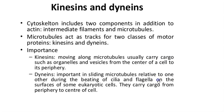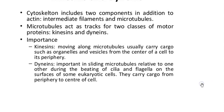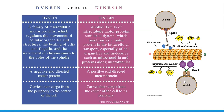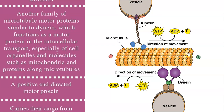Now we look at kinesin and dynein. The cytoskeleton includes components like actin, intermediary filaments, and microtubules. Microtubules act as a track for two classes of motor proteins: kinesins and dyneins. Kinesins move along microtubules carrying cargo such as organelles and vesicles from the center of the cell to its periphery. Dynein has the opposite action — it is important in sliding microtubules relative to one another during the beating of cilia and flagella, and also carries cargo from the periphery to the center of the cell.